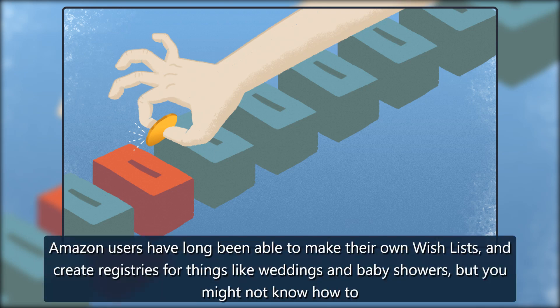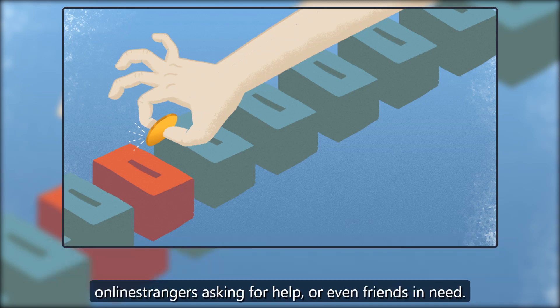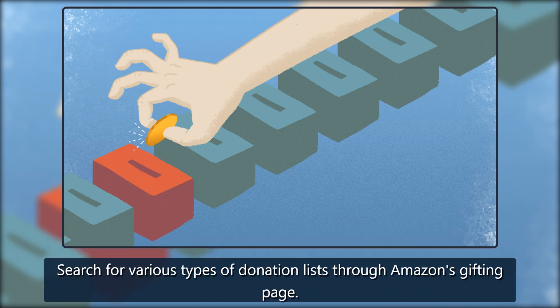Individual lists. Amazon users have long been able to make their own wish list and create registries for things like weddings and baby showers, but you might not know how to find others' lists. The site's registry and gifting page holds all the answers for those looking to donate items to individuals like teachers in your area, online strangers asking for help, or even friends in need. Search for various types of donation lists through Amazon's gifting page.